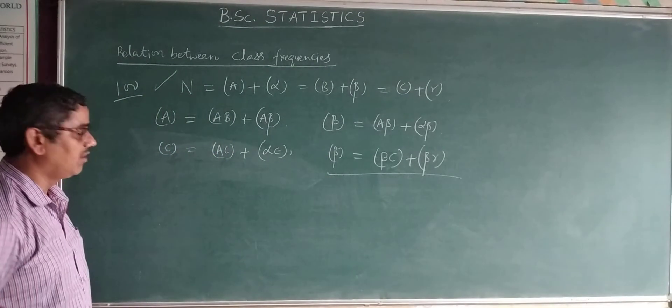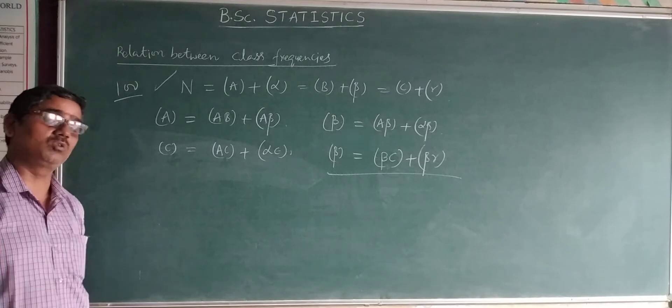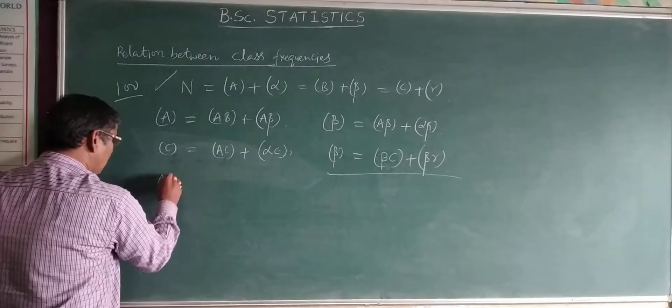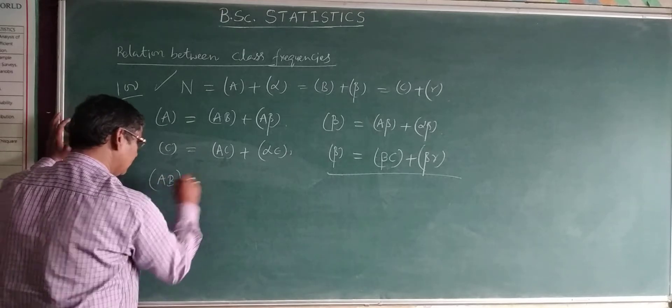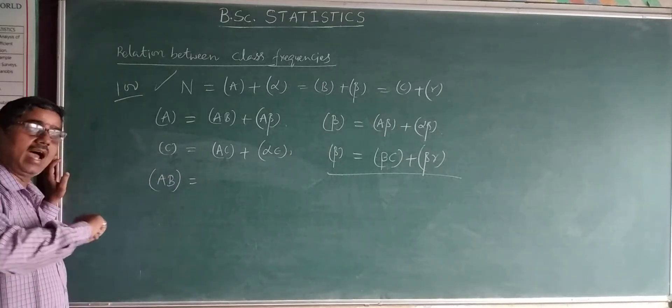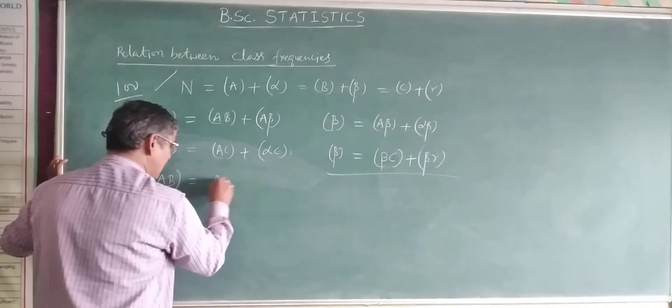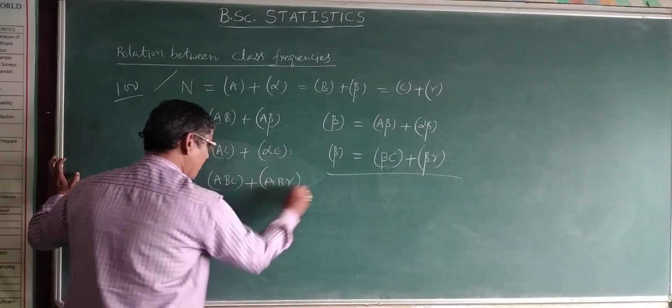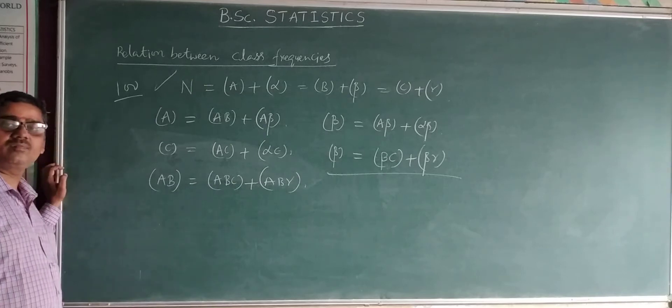For example, second order class frequencies, how they expressed in the third order. I'll highlight some formulas. First, AB. How it expressed with C. That is ABC plus AB gamma. Clear?